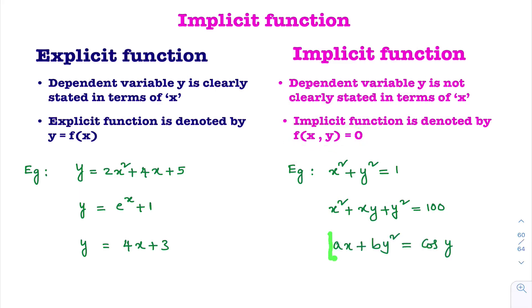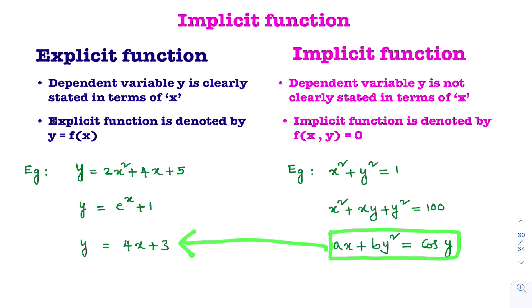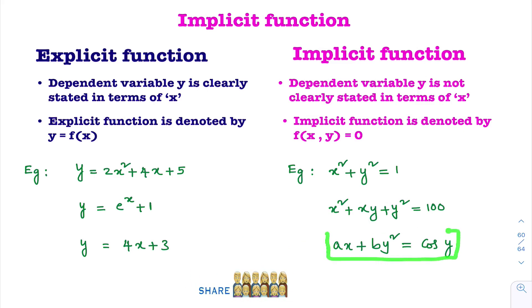Now you see this example: ax + by² = cos y. Here, is y clearly expressed in terms of x? No. It is a function in terms of x and y. By seeing this equation, we can easily say that y is not clearly stated in terms of x. So this is the example for implicit function.